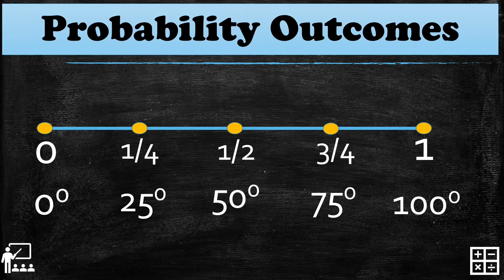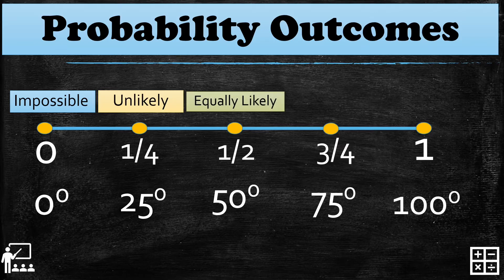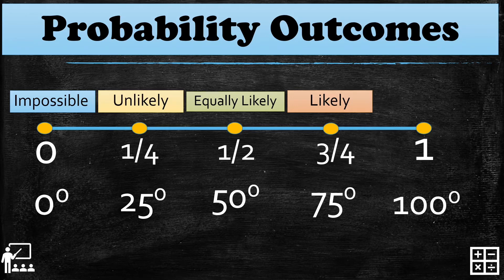Let me show you the different terms we use in probability outcomes. When we say zero percent, we say that it is impossible to happen. Twenty-five percent chances means it is unlikely to happen. Fifty percent is equally likely to happen — it's fifty-fifty chances. Seventy-five percent is likely to happen, more likely but not one hundred percent. And one hundred percent means it is certain to happen — one hundred percent chances that it will happen.